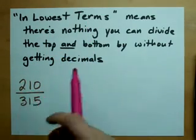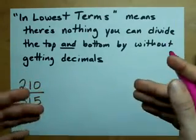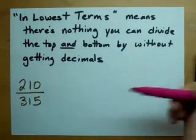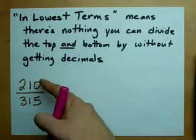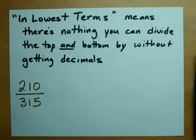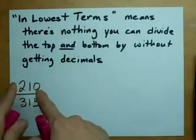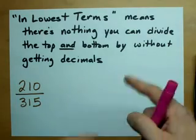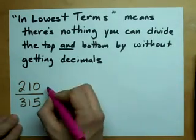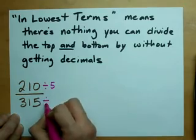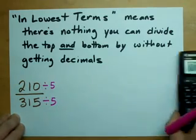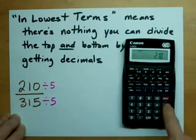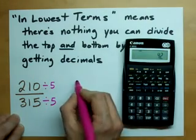In lowest terms means that there's nothing you can divide both of these by without going into decimals. We want the equivalent fraction that has the lowest possible whole number ratio between the two. What can we divide both of these by and not get decimals? I'm going to tell you right off the bat — it's 5. I'll divide the top by 5 and divide the bottom by 5. 210 divided by 5 gives me 42.